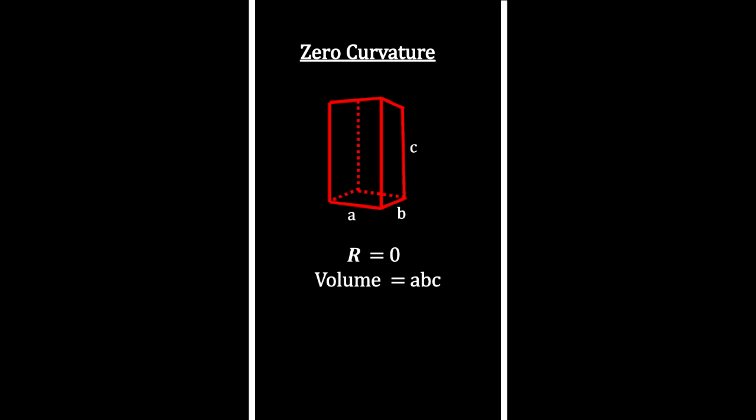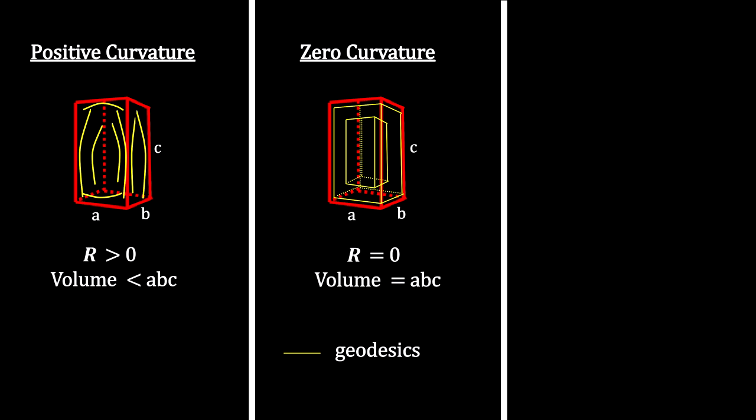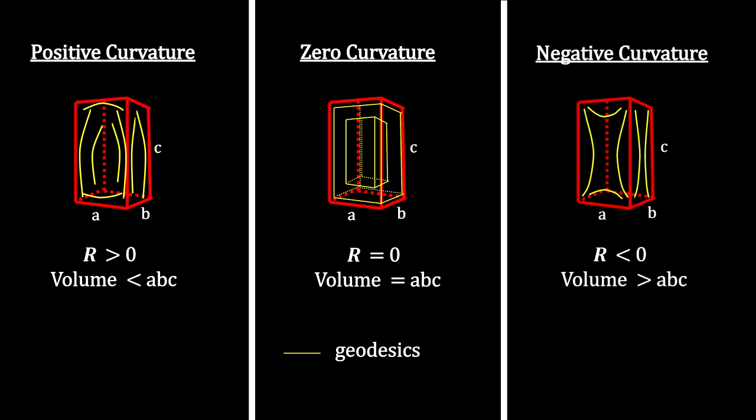For example, in Euclidean flat space, a cuboid's volume is A times B times C. The yellow lines represent geodesics inside the box. The volume is less than this if the Ricci curvature in the interior region is positive. In other words, it's smaller on the inside. The volume is more than this if the Ricci curvature of the interior region is negative. In other words, it's larger on the inside.